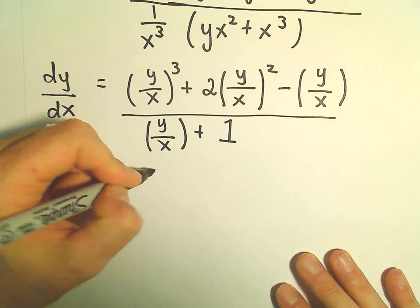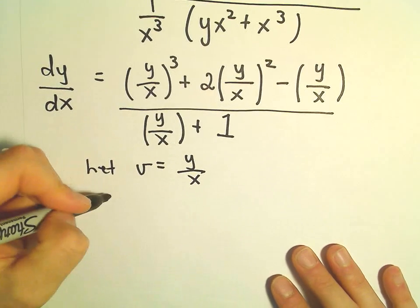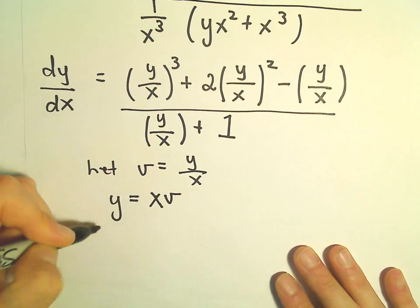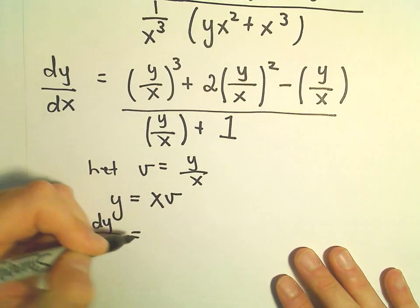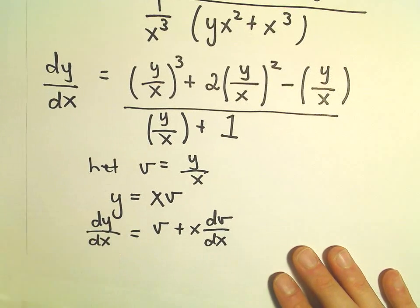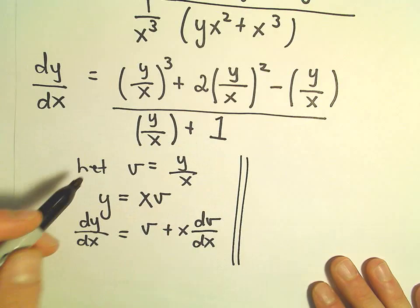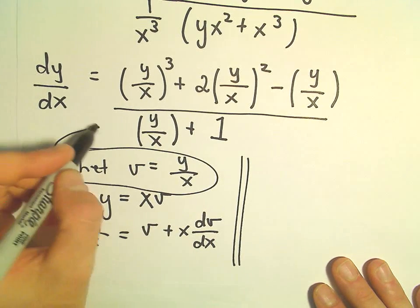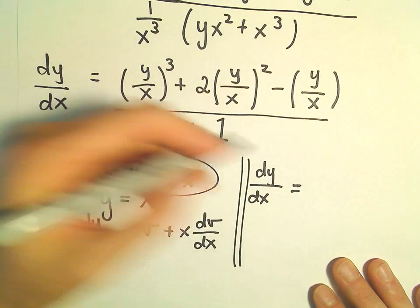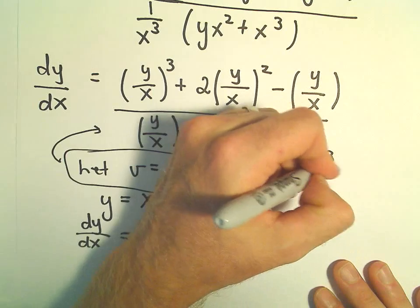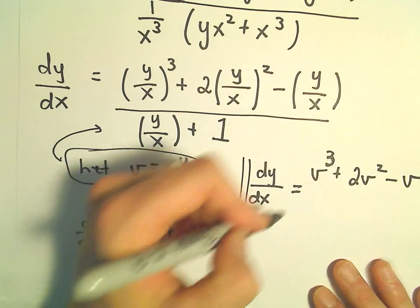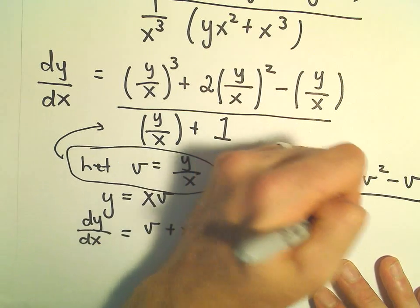So this is our differential equation dy/dx, and here we do our substitution. We're going to let v = y/x, which tells us y = xv. That means dy/dx = v + x·(dv/dx) by taking the derivative. Plugging the substitution into our equation, dy/dx equals v³ + 2v² - v, all over v + 1.